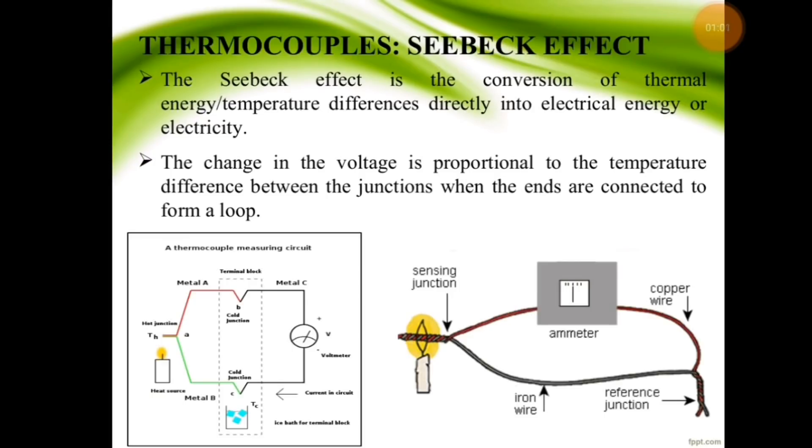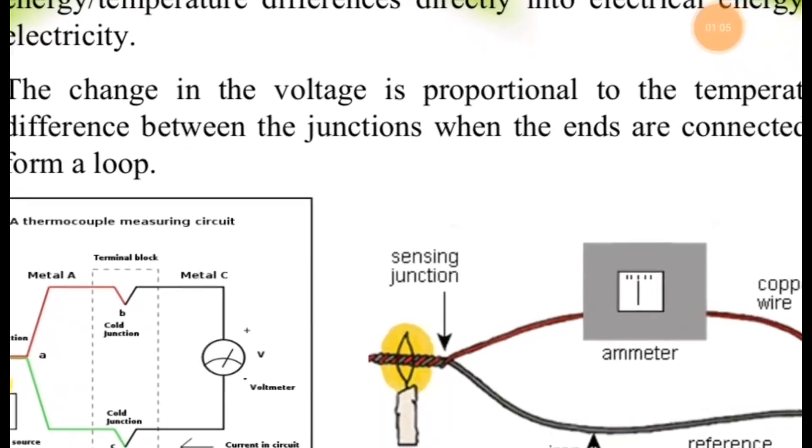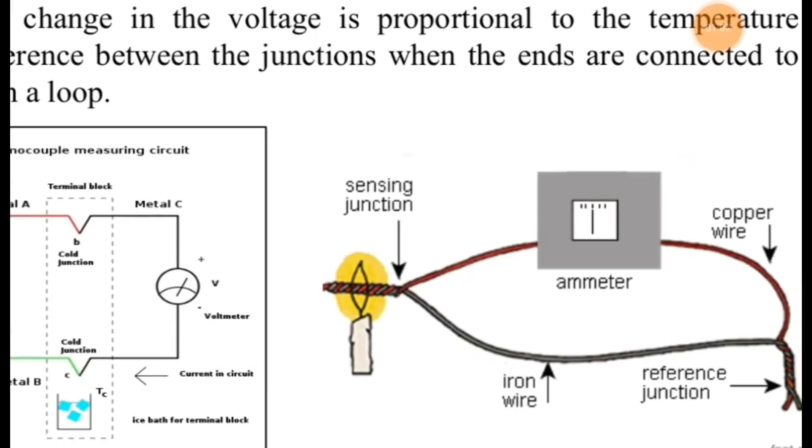This diagram shows a candle, ammeter, copper wire, reference junction, and iron wire forming a circuit.